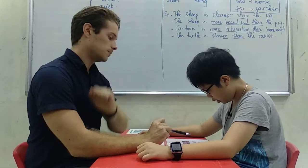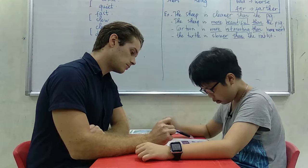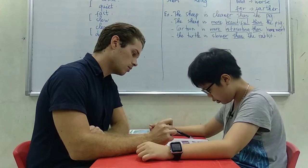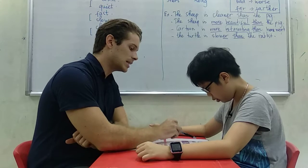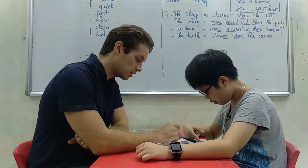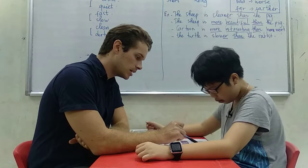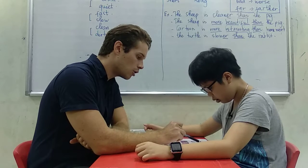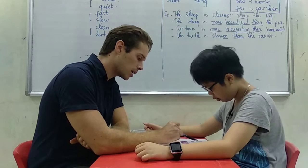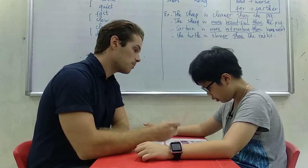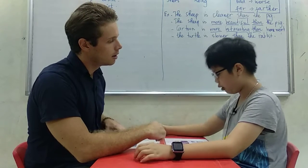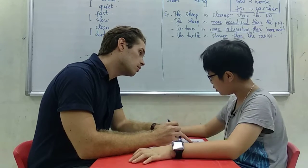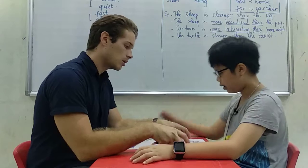This one is different because the table is different. The tree and the clock are tall. The table is different. What shape is it? It's a square. A square.